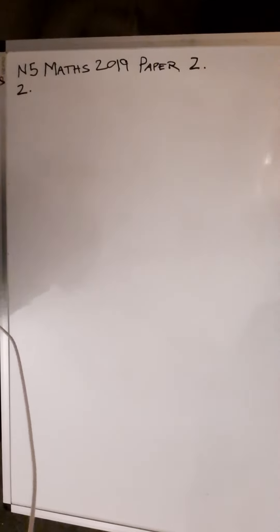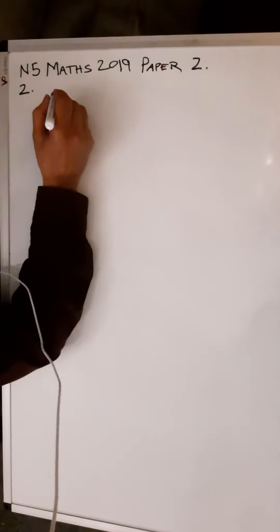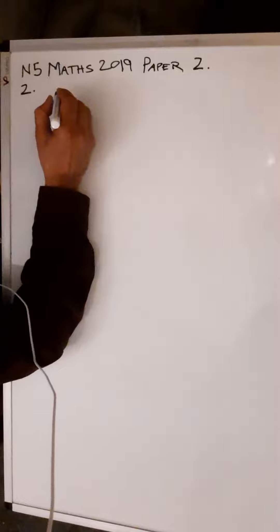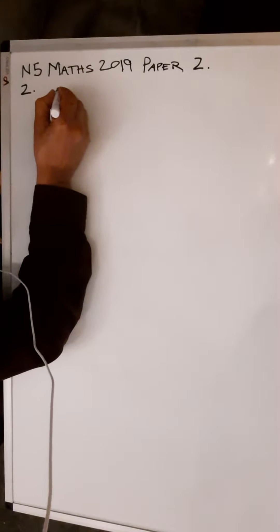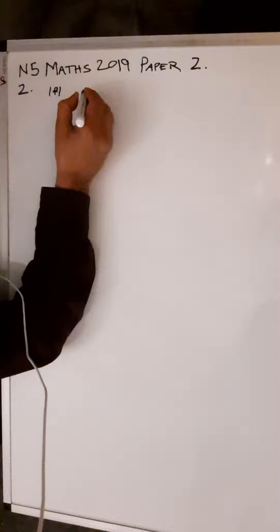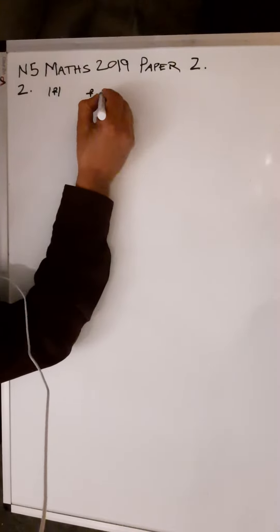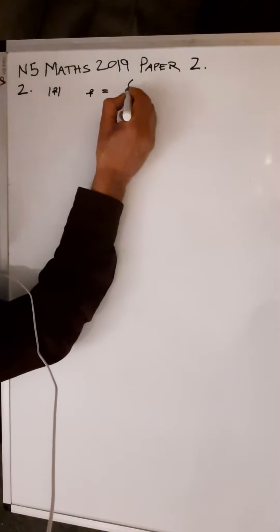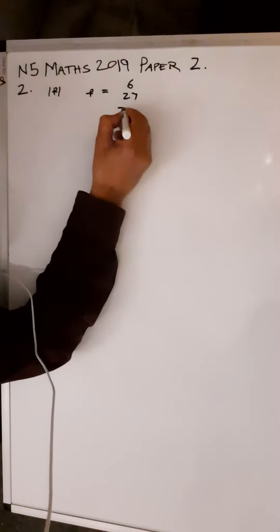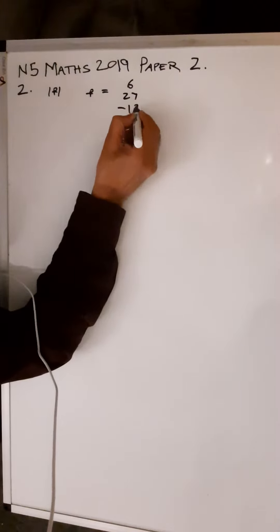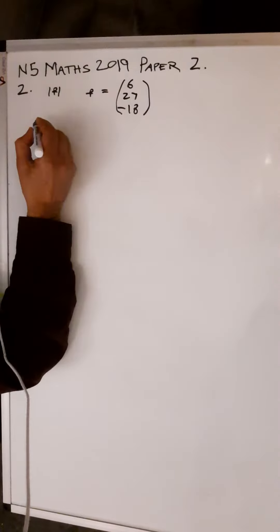National 5 Maths 2019 Paper 2, question number 2: find the magnitude of P, given that the vector P in component form is (6, 27, -18).